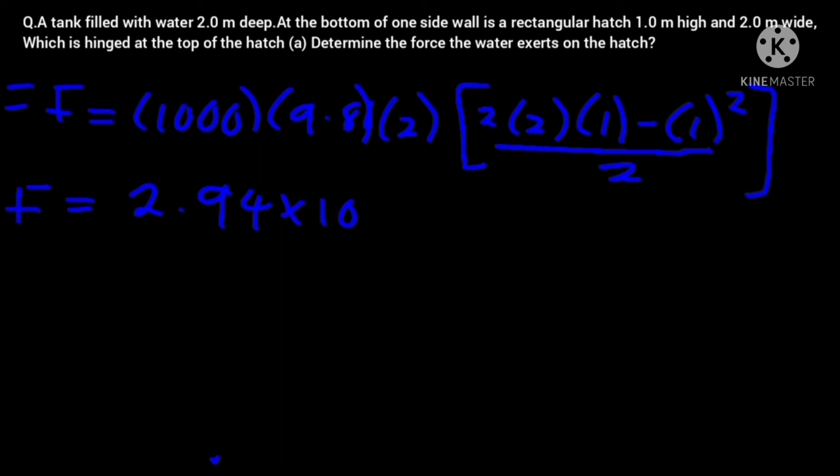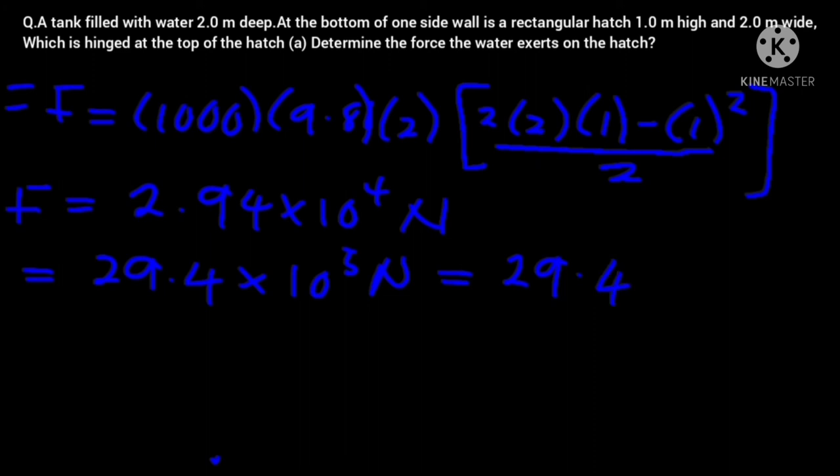It's going to be equal to 2.94 times 10 to the power of 4 newtons, which is equal to 29.4 times 10 to the power of 3 newtons. And we know that this is the same as 29.4 kilonewtons. So we are done now. So this is our final solution for the question. So this is the force the water exerts on the hatch. I hope you've enjoyed the video.